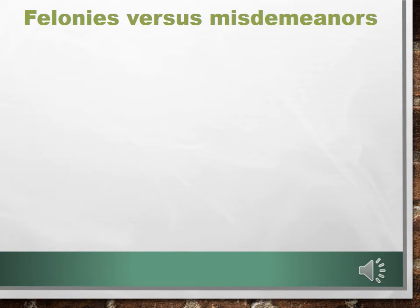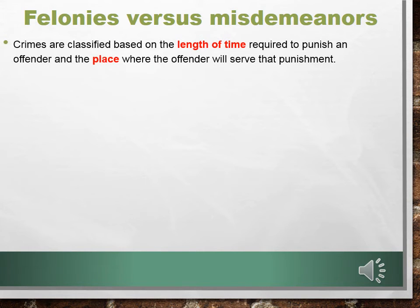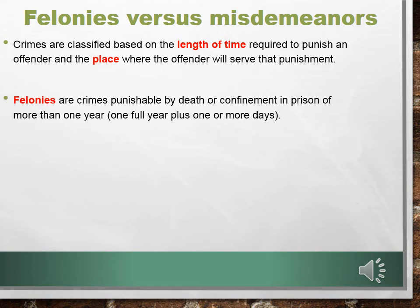One way in which we classify crimes is by the length of a punishment and where that punishment will be served. To do this, we classify crimes into felonies and misdemeanors. Crimes are classified based on the length of time required to punish an offender and the place where the offender will serve that punishment. The more serious crimes are felonies — these are crimes punishable by death or confinement in prison of more than one year. One year equals 365 days, or 366 days on a leap year, plus one or more days in confinement.